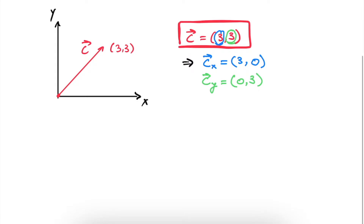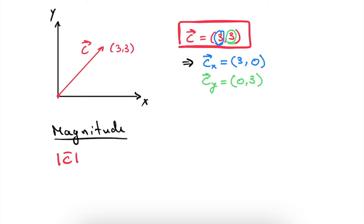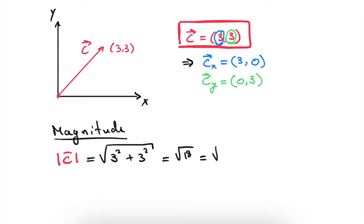Before we go to the graphical interpretation, let's look at the magnitude of our vector c. The magnitude of c is simply equal to the square root of the sum of the squares of each of its components. For the x component we have 3 squared, and for the y component we also have 3 squared. This equals the square root of 18, which simplifies to the square root of 2 times 9. Taking the square root of 9 out gives us 3 times the square root of 2, which is the magnitude of our initial vector.